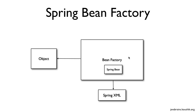Now we'll actually code this. We'll have a main method which calls the Spring bean factory, and we'll provide a Spring XML as well. We'll define the bean that needs to be created in our Spring XML, then talk to the bean factory and say 'get me that bean.' The bean factory will read the XML and give us the bean. This is not really dependency injection yet — we are still using the basic factory functionality of the Spring framework to get a bean out of it. We have not started doing dependency injection, but this is the first step.